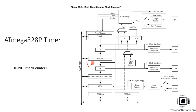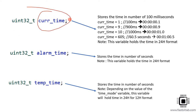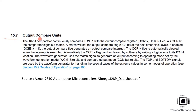This timer also has two compare registers. Whenever the counter's value matches the compare register value, a compare interrupt is generated. For example, if you store the value 200 in the compare register and start the timer, when the T-count register reaches 200 the comparator detects a match and an interrupt is generated. We'll catch this interrupt in our application to increment the current_time variable.